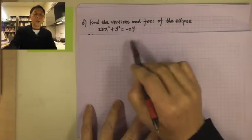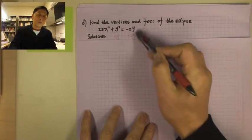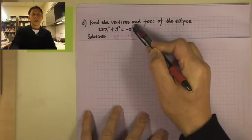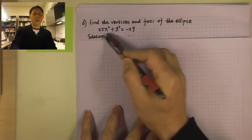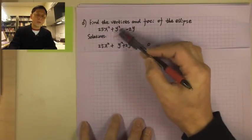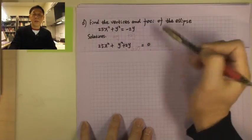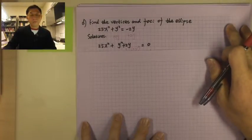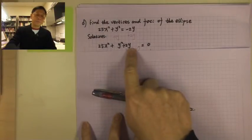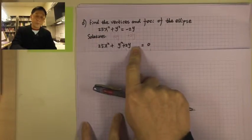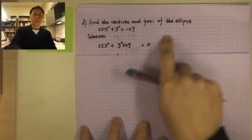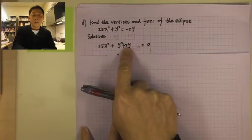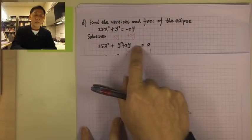Add 2y to both sides. Cancel the positive and negative 2y on the right-hand side; the right-hand side becomes 0. The left-hand side has 25x squared plus y squared plus 2y. Now we want to make this a complete square. We need a constant — half of the coefficient of y, squared. That is (2 divided by 2) squared = 1. So we need to add 1.